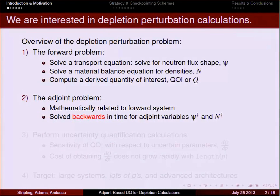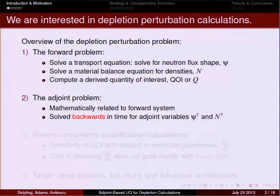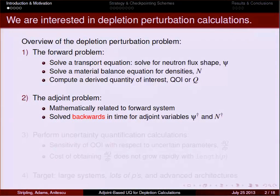Coupled to the transport equation is a material balance equation, whose solution gives the densities at a certain point in time — for example, the actinides that Leslie spoke about in the previous talk. We solve these coupled, nonlinear equations and then compute some quantity of interest, which could be how much waste the reactor produced, what the power profile is at end of life, or how long the reactor lasted before we had to shut down to refuel. That's the forward problem. Then we turn around and solve an adjoint problem.